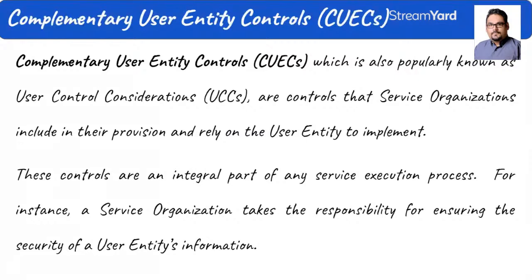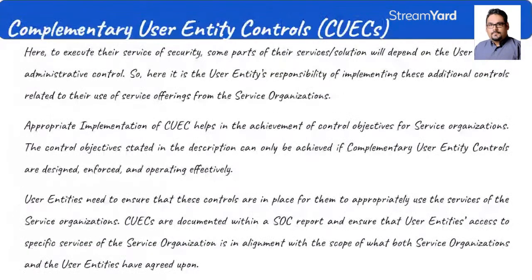This is a very important part of any service execution process. The service organization takes responsibility for ensuring the security of a user entity's information, but some parts of the solution will depend on user administrative controls — like access control. If you do not have access control to the bank's network, how will you work on their data? It is the user entity's responsibility to implement these additional controls related to their use of the service offering.